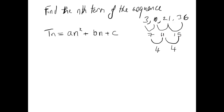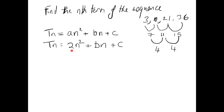One thing you can take as fact is that the nth term of a quadratic sequence will always be in the form an squared plus bn plus c, where a, b, and c are numbers. It could be that either b or c are 0, but generally speaking it would be in this form. The second thing — and this is really very important to remember — is that the a value is always half of the second difference. So in this case, a would be 2. Therefore we can put 2 in instead of a, and all that remains is to figure out the values of b and c.